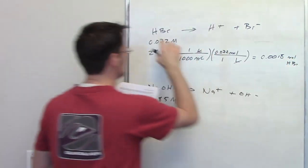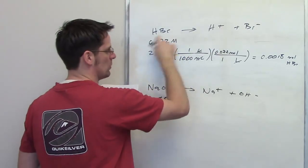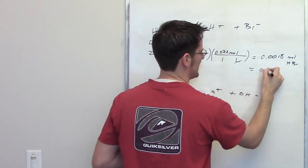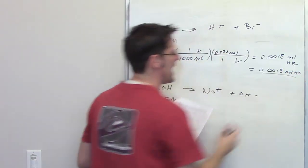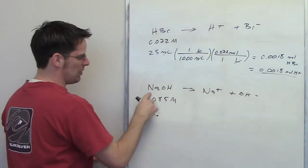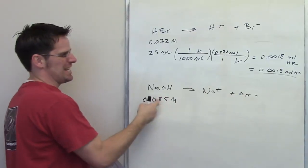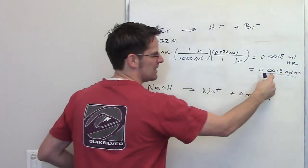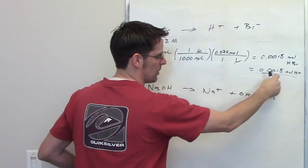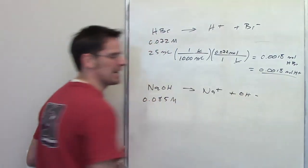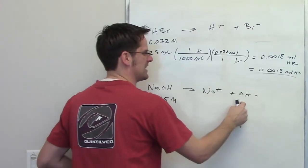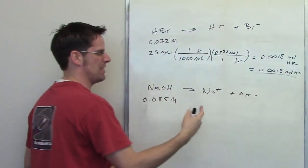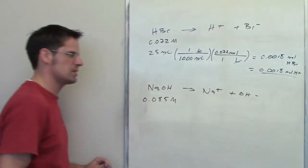Now because HBr releases H+ in a one-to-one ratio, by extension that means that I'm going to get 0.0018 moles of H+. So I have to add whatever volume of sodium hydroxide at this concentration it takes in order to get 0.0018 moles of OH-. Does that make sense? Because I want to add the exact amount to perfectly cancel out this number of moles of H+. So I have to add the same number of moles of hydroxide.